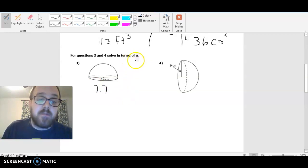Now they're asking me to solve in terms of π, so I'm going to leave π here. So what I'm going to do is I'm going to do 4 times π times 7.7 cubed divided by 3. And I'll go ahead and calculate that.